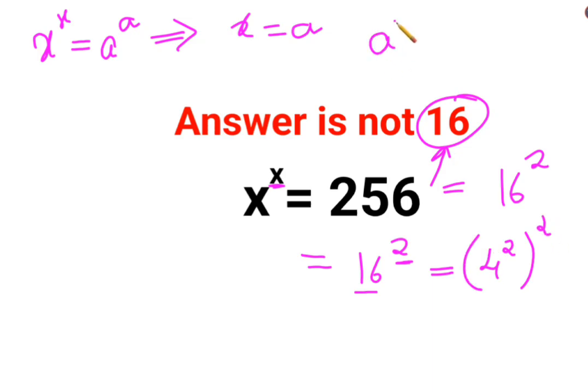And in indices, we know a raised to m, the whole raised to n, can be written as a raised to m into n. So this can be written as 4 raised to 2 multiplied by 2, which gets you 4 raised to 4.